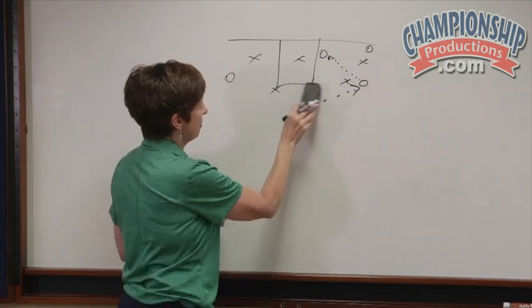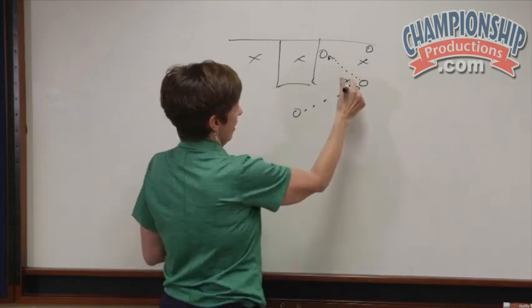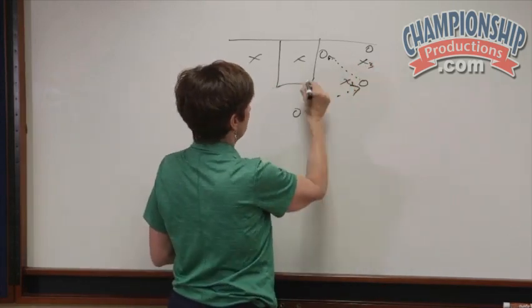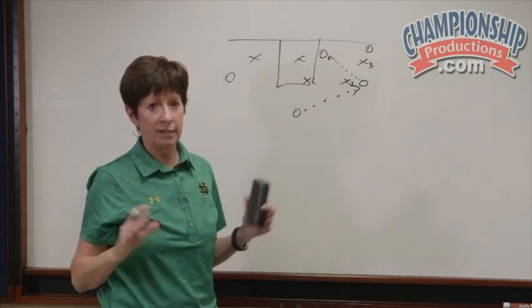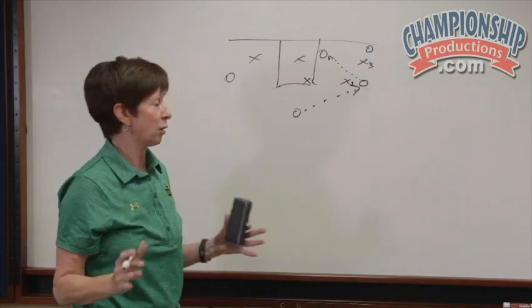When the ball gets into the post, X1 was here on the ball. X2 is coming over. You always have the ball side elbow. Whether there's somebody there or not, you're always on the ball side elbow.